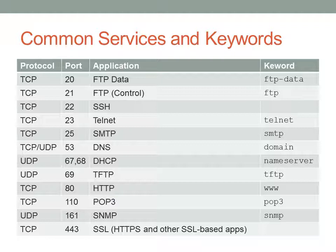There are keywords and ports for common services you might want to write access lists for. You can see the keyword on the far right — for example, the www keyword for HTTP port 80. You should know most of these common services, their ports, and the protocols they use off the top of your head. You don't necessarily need to know the keywords for the CCNA exam, but it's probably not a bad idea.